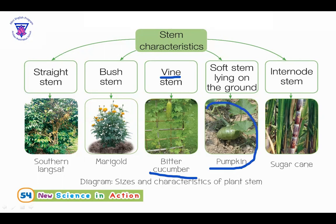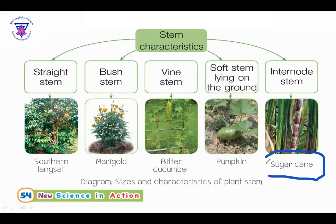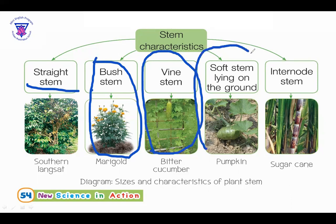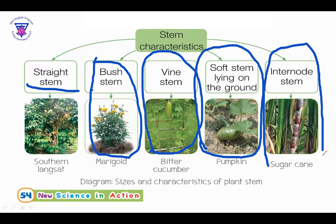How about the pumpkin? The pumpkin STEM is very soft — soft STEM lying on the ground. And the next one, the sugar cane. The sugar cane has an internode STEM. So, to summarize: Southern Langsat is straight STEM, marigold is bush STEM, bitter cucumber is vine STEM, pumpkin is soft STEM lying on the ground, and sugar cane is internode STEM.